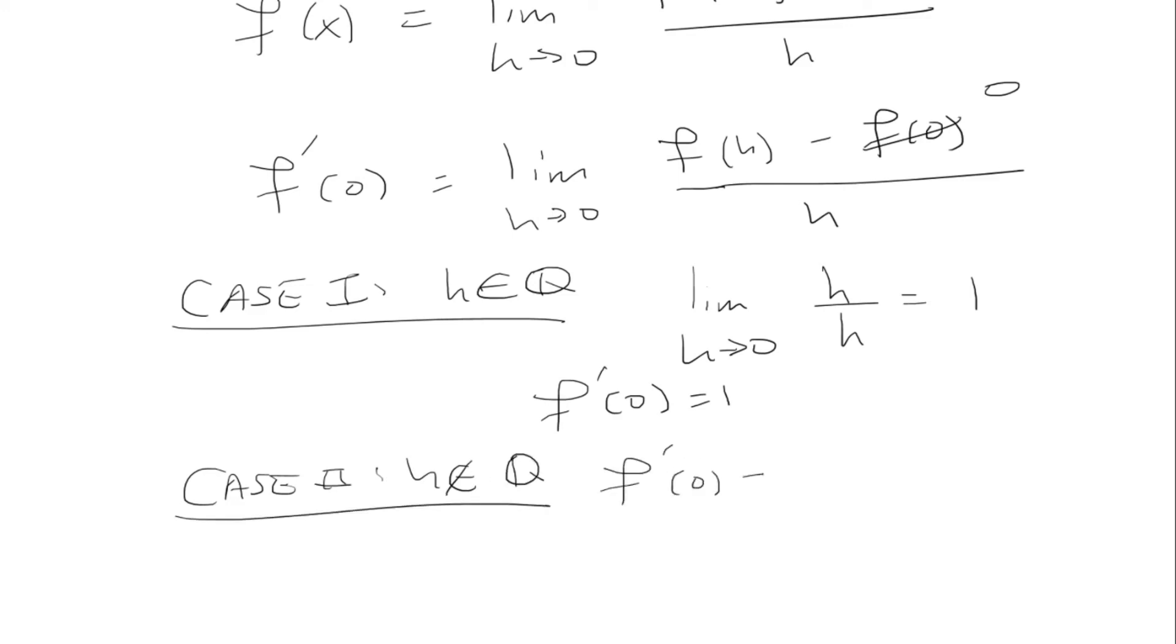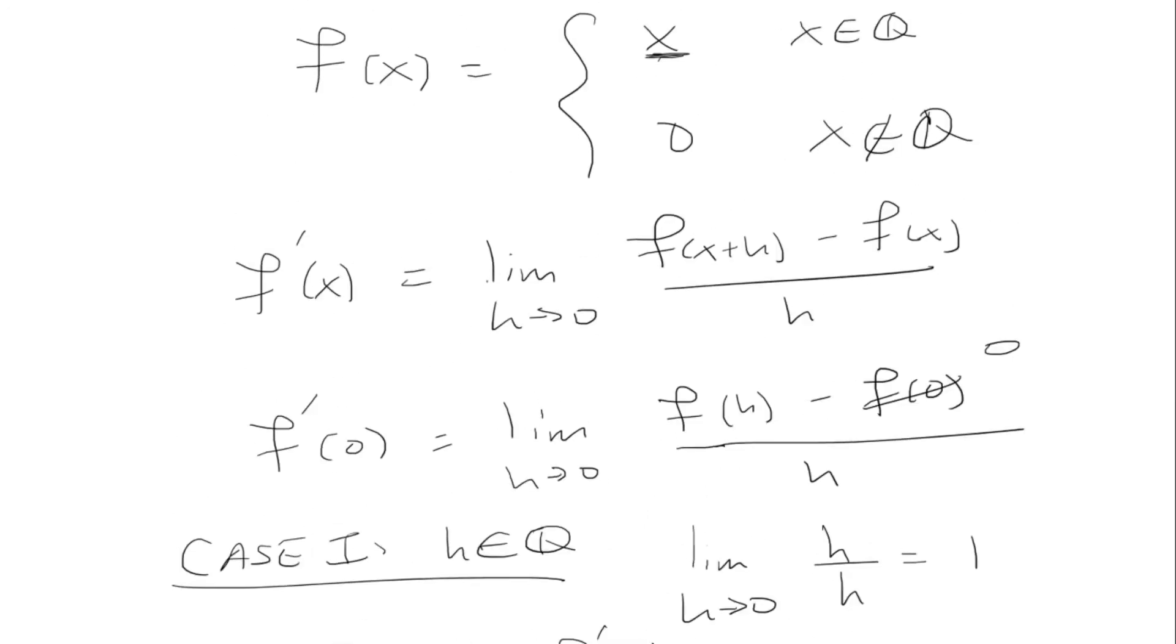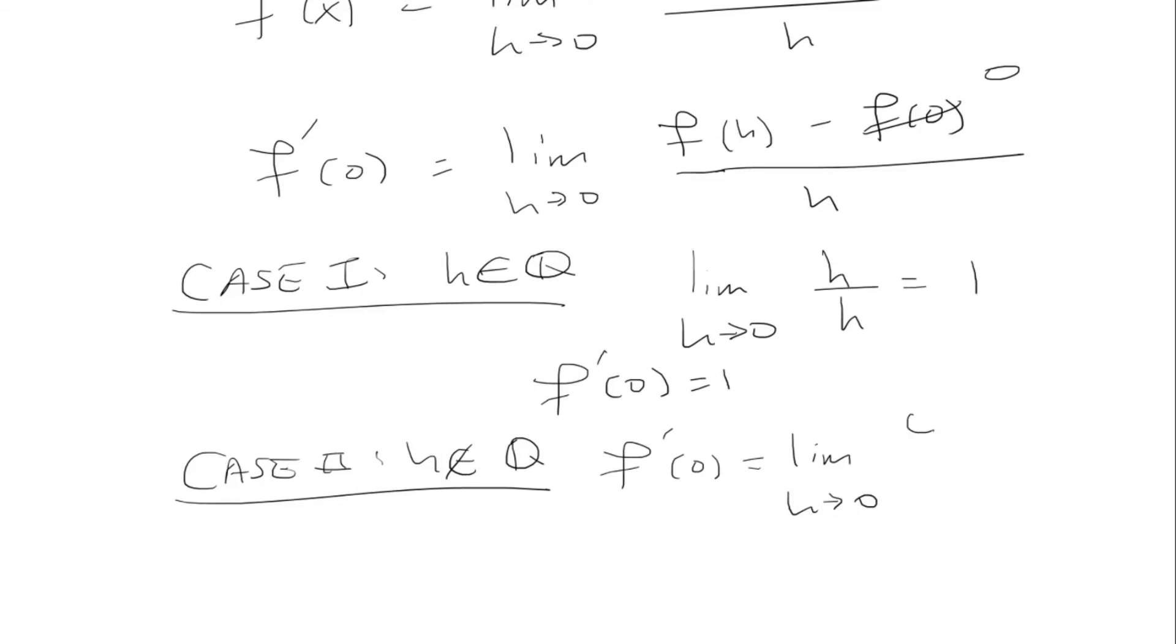We'll have f prime of 0 equals the limit as h approaches 0. We know it simplifies to f of h over h. And f of h is always going to be 0 if it's irrational. Because in this case right here, it's always going to be 0. So we'll just have 0 over h, which is clearly 0.